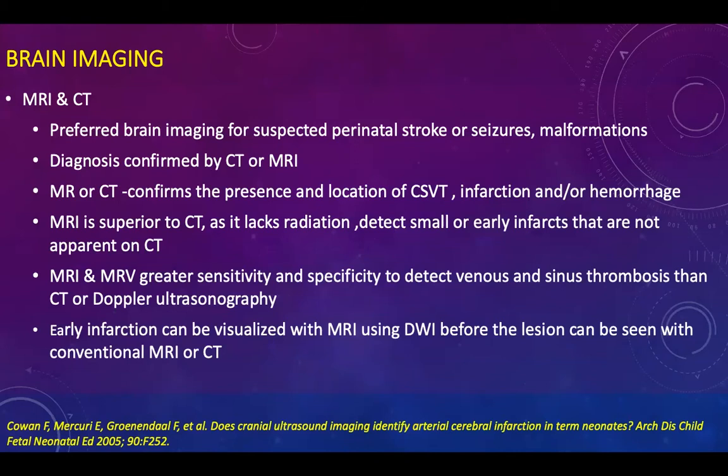MRI and CT are readily available in all major clinics. MRI is superior to CT as it has less ionizing radiation and more definition. Adding MRV and MRA provides greater sensitivity and specificity to detect venous and sinus thrombosis. Ultrasound scan is commonly used for fetal and neonatal screening and is readily available; if MRI is not immediately available it is our first choice, but it is less sensitive than MRI.